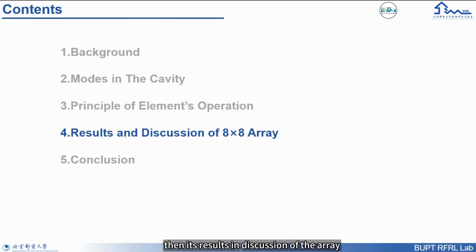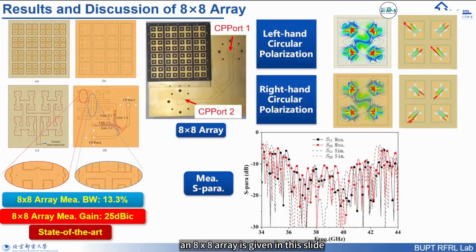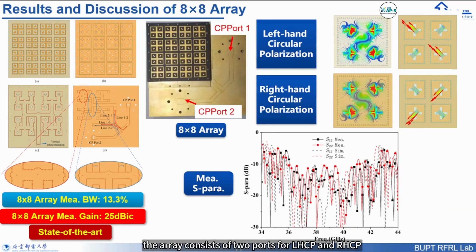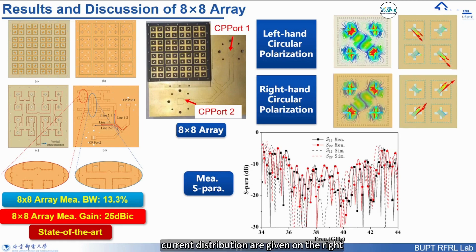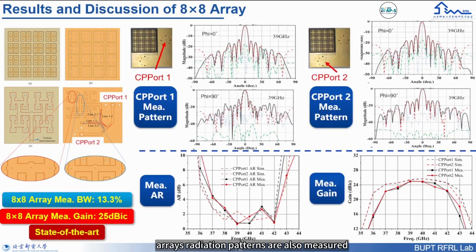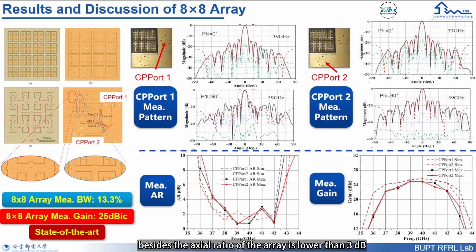Now the results and discussion of the array. An eight-by-eight array is given in this slide. A coupler is introduced for dual circular polarizations. The array consists of two ports for LHCP and RHCP, and the electric and current distributions are given on the right. The measured S-parameter for the two ports is 13.3%. The radiation patterns are also measured; the patterns are symmetrical at the E and H planes for the two ports. The axial ratio of the array is lower than 3 dB within the bandwidth.